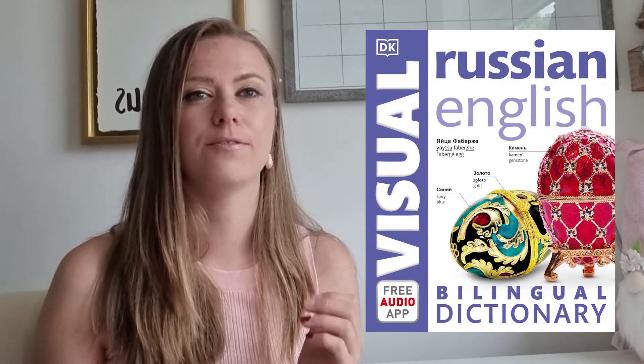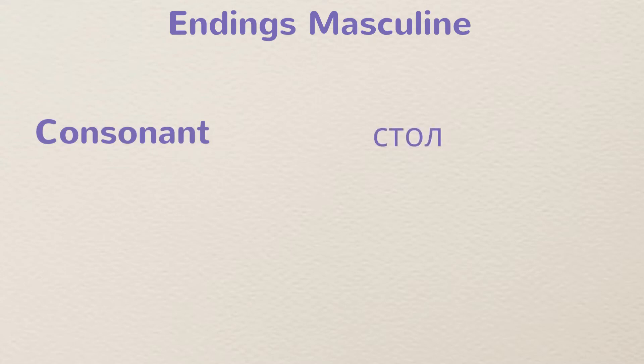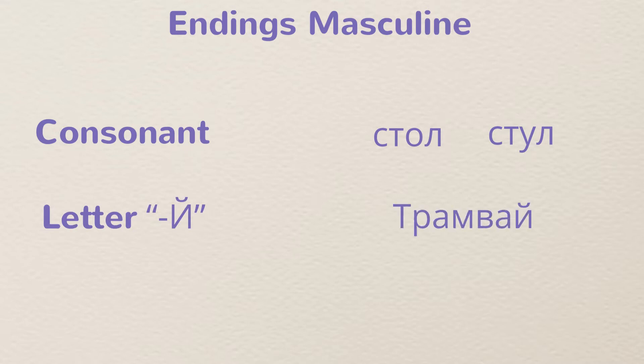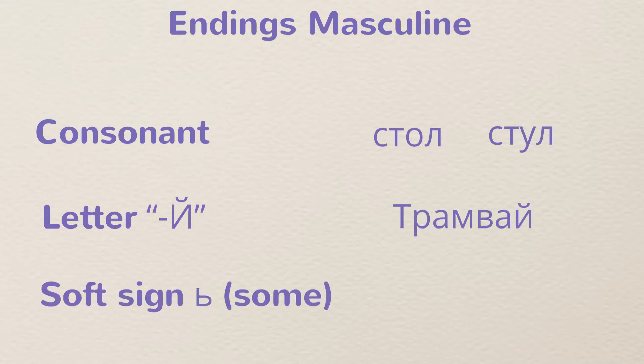If you are unsure what gender a particular noun is, make sure you refer to a dictionary — M for masculine, F for feminine, and NT for neuter. So how do you know the gender of a noun? It's determined by the ending. The most common endings for masculine nouns in singular are a consonant, like 'stol' (стол); the letter Й, like 'tramvaj' (трамвай); or a soft sign, like 'slovar'' (словарь).